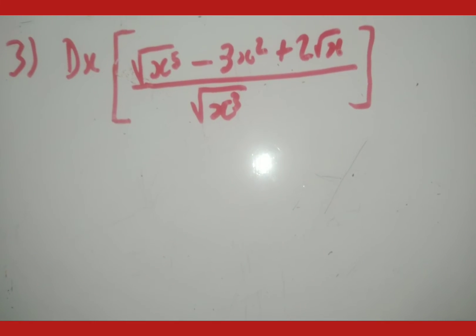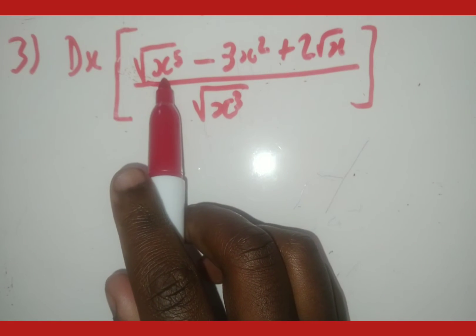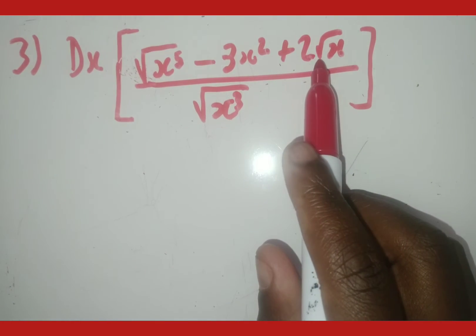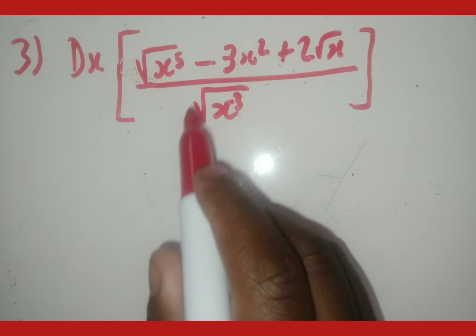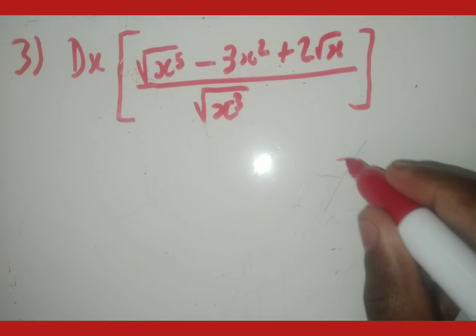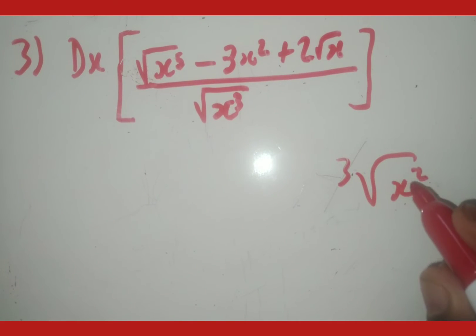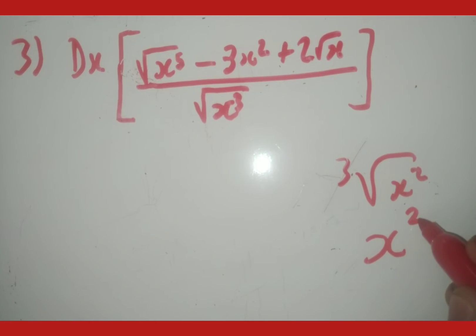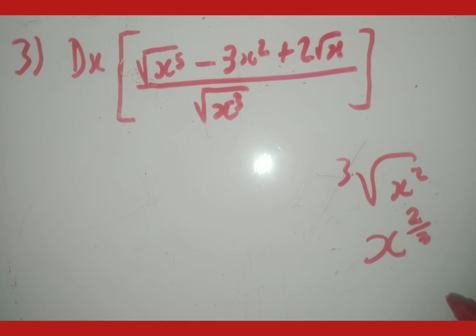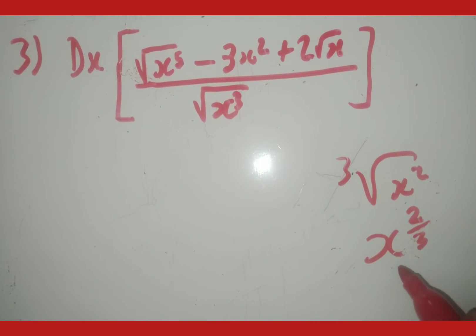Here is a third example. We have the square root of x to the 5th, minus 3x squared, plus 2 root x, all over the square root of x cubed. There is one term in the denominator, so we have to split. Whenever you've got a square root sign — radicals — you need to convert it to exponential fraction form: the exponent inside goes on top and whatever is outside goes to the denominator of the fraction.